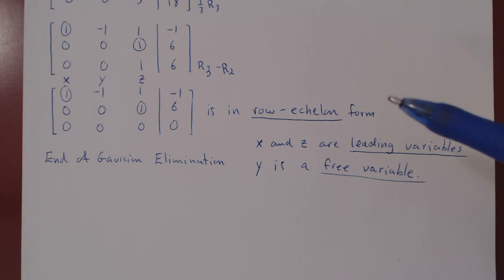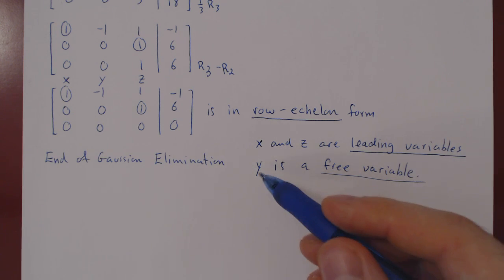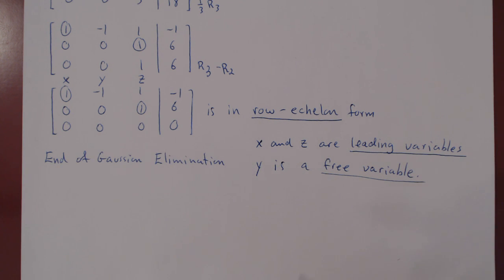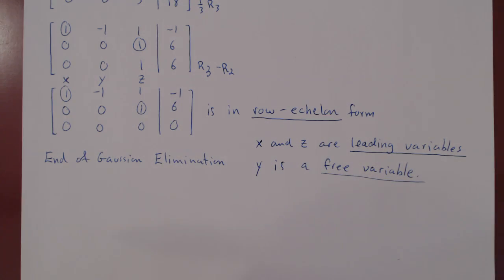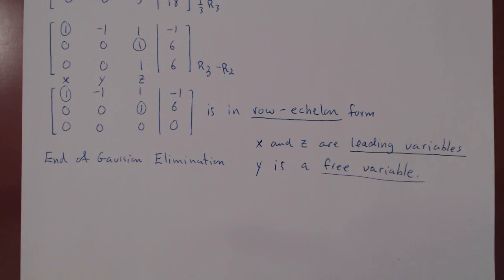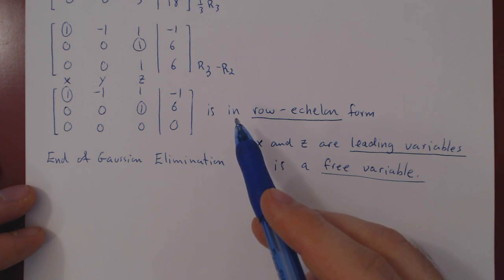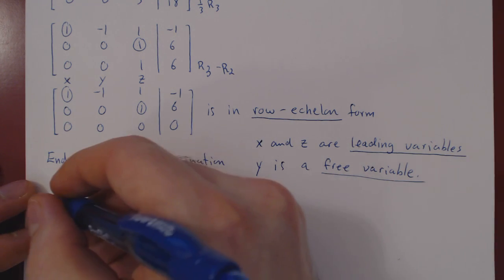We could label y as t and use backward substitution, but because there is a z term and a negative one term, this would involve extra algebra. We can do better by completing Gauss-Jordan elimination, which gives us a matrix in so-called reduced row echelon form.